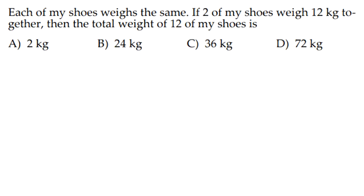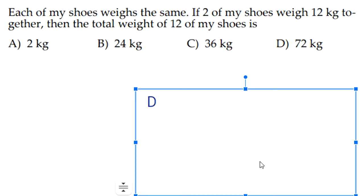The next question is: each of my shoes weighs the same. If two of my shoes weigh 12 kg together, then the total weight of 12 of my shoes is. So two shoes equals 12 kg, so 12 shoes would be, 12 divided by 2 is 6. And because we multiply 2 and 6 to get 12, we have to multiply 6 with 12, and that would be 72. So our answer would be, again, D, 72.